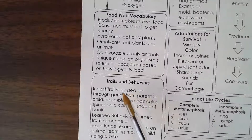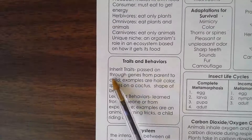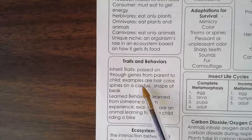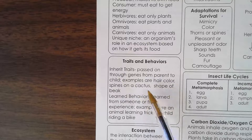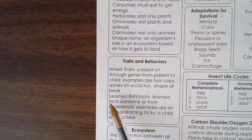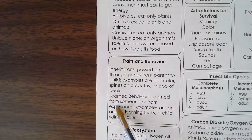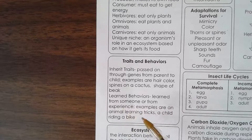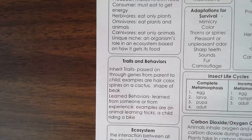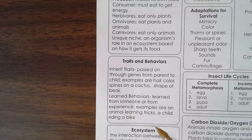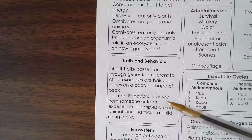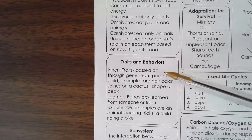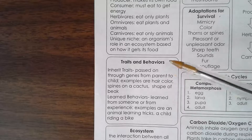Traits and behaviors. Inherited traits are passed on through genes from parent to child — examples are hair color, spines on a cactus, and shape of a beak. Learned behaviors are things learned from someone or from experience — examples are an animal learning tricks, a child riding a bike, a dolphin jumping through a hoop, you learning how to write your name. Inherited traits also include basic instincts like breathing and crying.